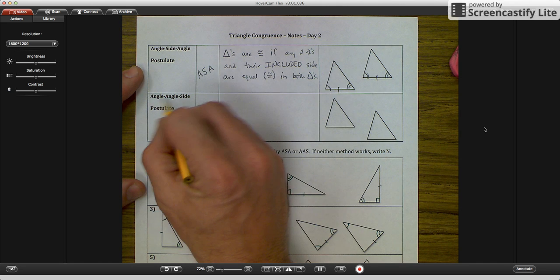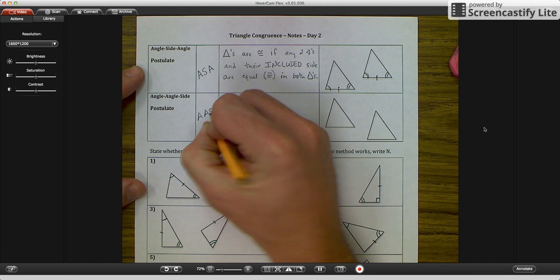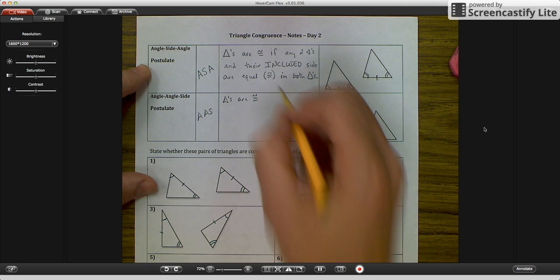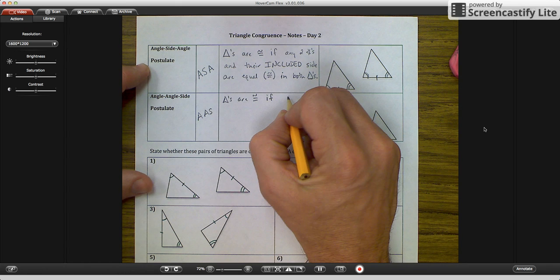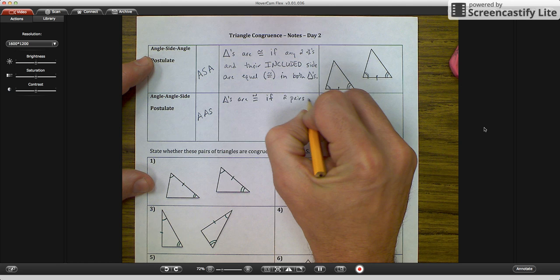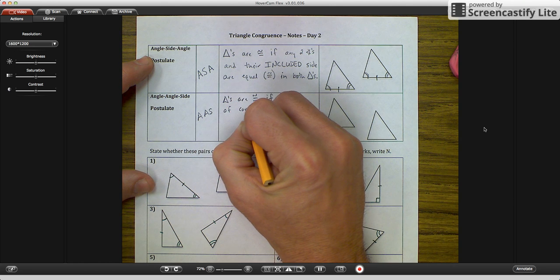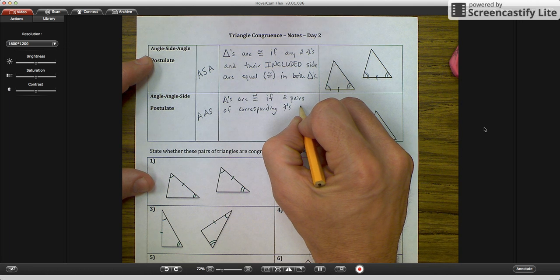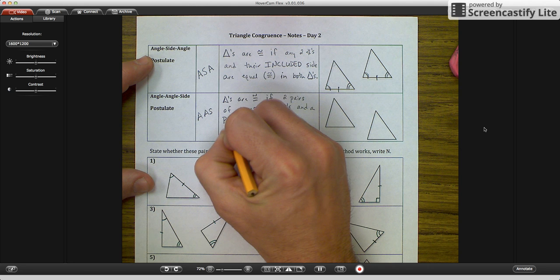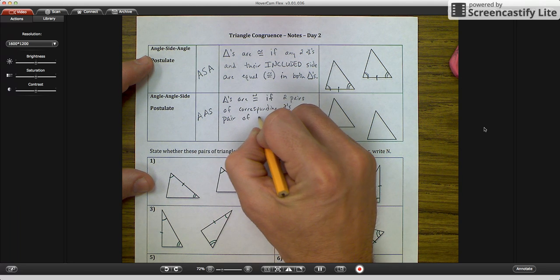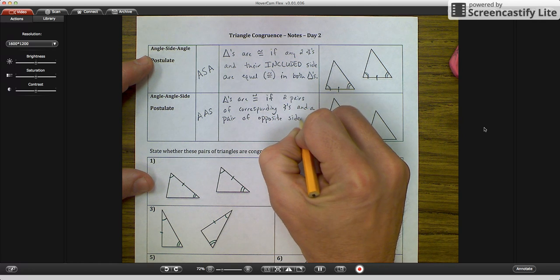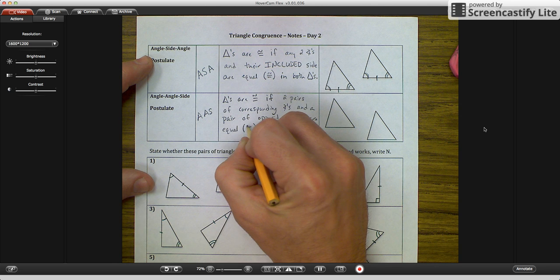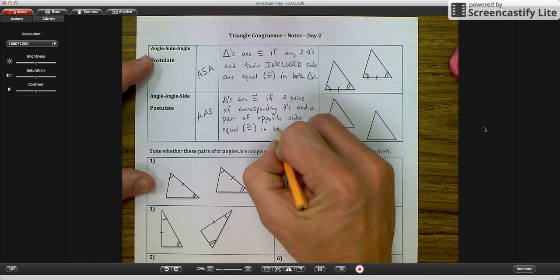Okay, the second one that we're going to talk about is angle, angle, side. An angle, angle, side postulate says triangles are congruent, remember it's always going to start off with triangles are congruent if, and this is where they're going to change, if two pairs of corresponding angles and a pair of opposite sides are equal. What's that word for equal again? Starts with a C. Congruent in both triangles.